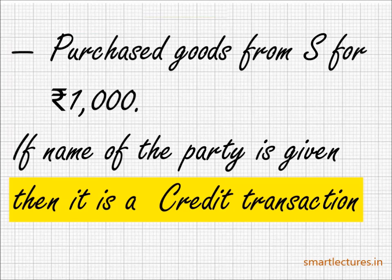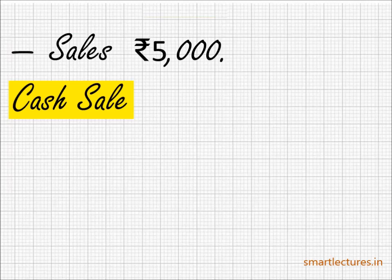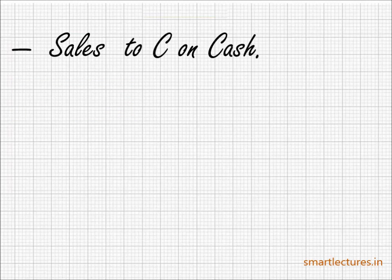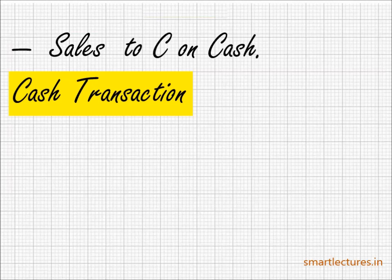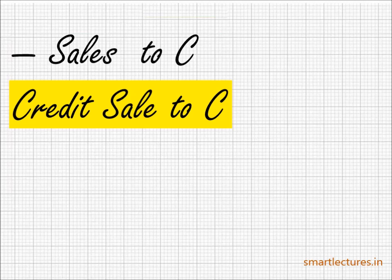Suppose in your question you find 'sales Rs. 5000.' They have not mentioned whether these are cash sales or credit sales. If the question is silent, you will assume that these are cash sales. Now take another example: 'sales to C on cash' — it's clearly given that this is a cash transaction; you sold the goods and received the cash immediately. Next example: 'sales to C' — C is the customer and goods have been sold to C, but it's not mentioned whether you got cash immediately. We'll assume this is a credit transaction because the name of the party is given and it is not mentioned that this is a cash transaction.